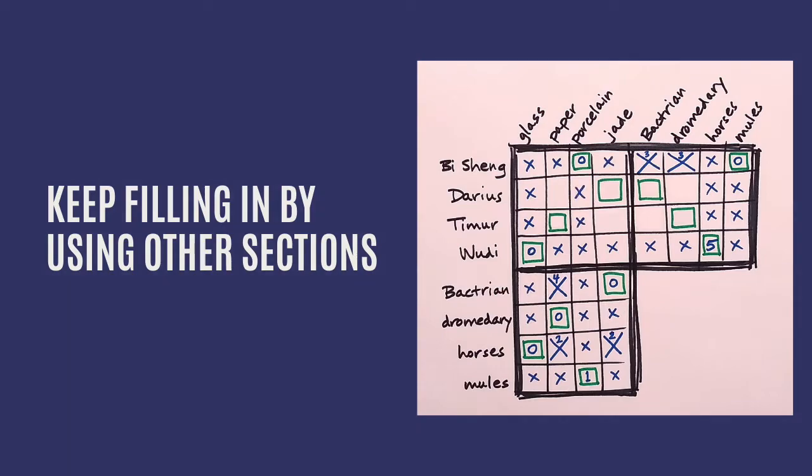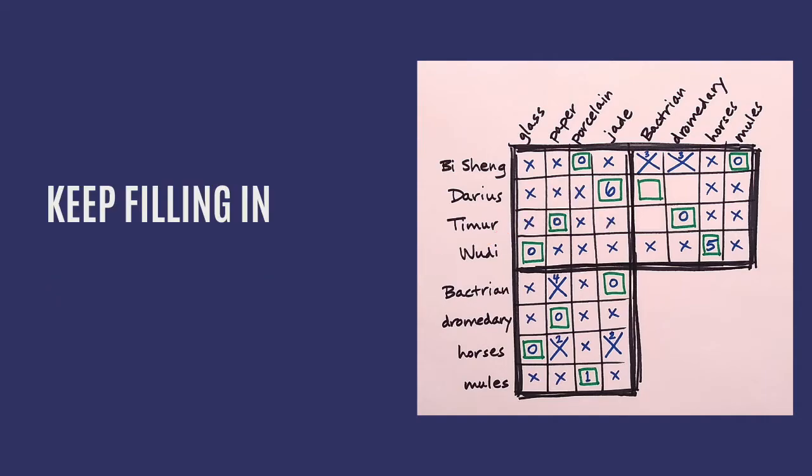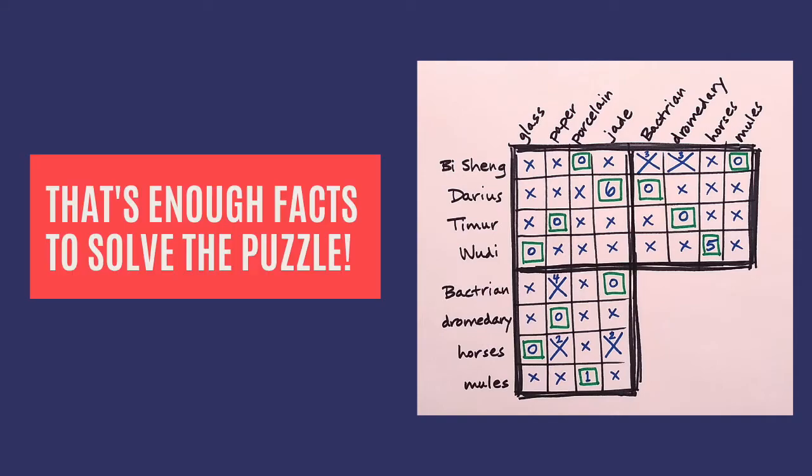That's all the solver can do with these clue facts. To complete the puzzle, the solver will need one more clue fact. Let's tell them Darius goes with jade. And that's enough facts to solve the puzzle.